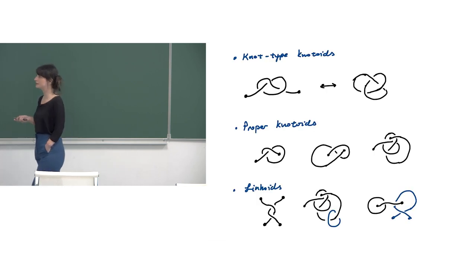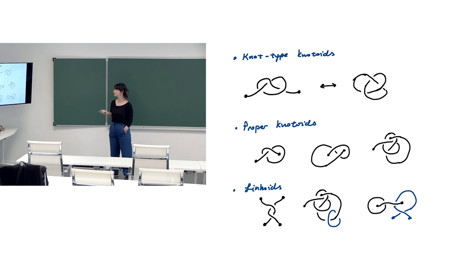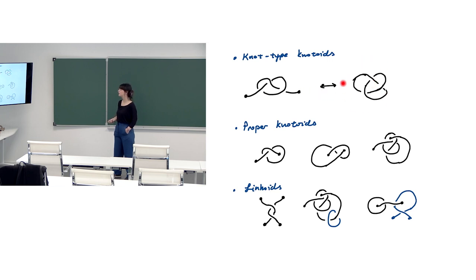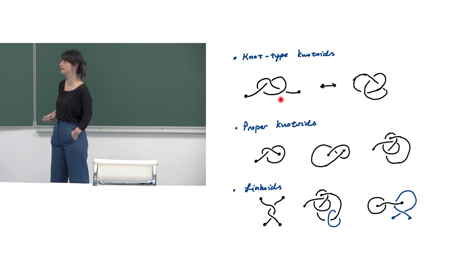When we consider knotoids in S² there are two endpoints and they can lie in the same region determined by the diagram in the two-sphere. In this case we can regard these diagrams as 1-tangles. When we connect the endpoints we see that no new crossings are created, and it closes up to the trefoil. There is a one-to-one correspondence between knot-type knotoids — knotoids admitting at least one diagram with endpoints in the same region — and classical knots.